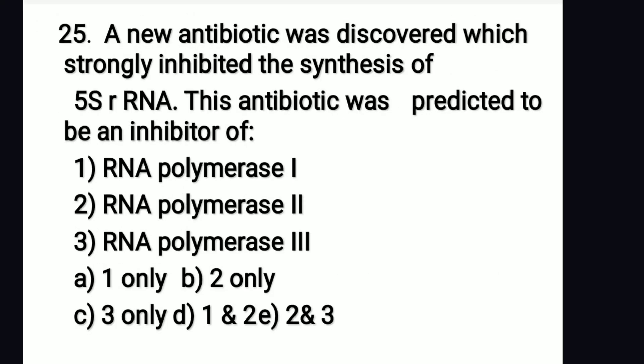A new antibiotic was discovered which strongly inhibited the synthesis of 5S rRNA. This antibiotic was predicted to be an inhibitor of: the right answer is option C — RNA polymerase 3 only, because 5S rRNA is synthesized by RNA polymerase 3. Other rRNAs are mainly synthesized by RNA polymerase 1.